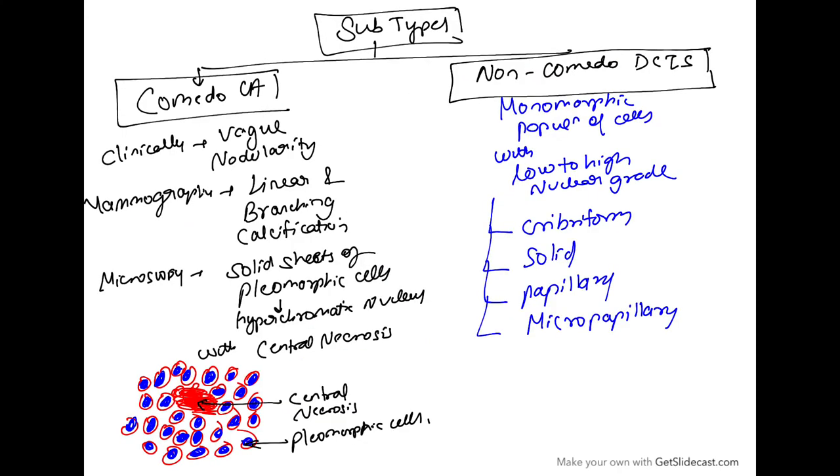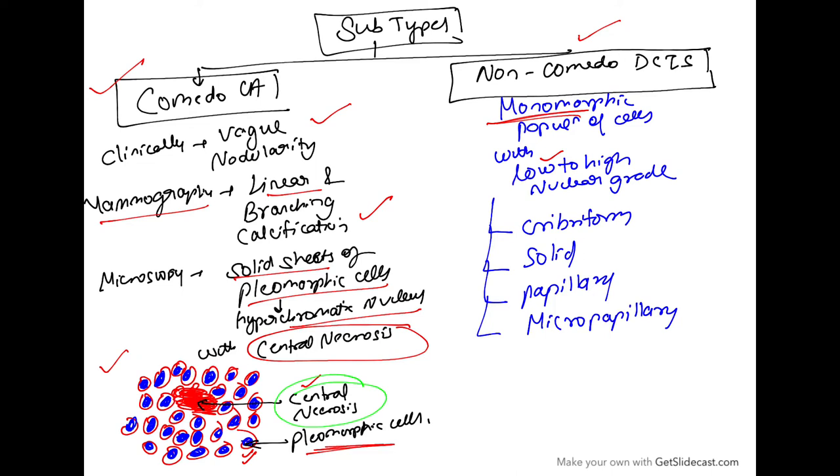There are subtypes classified as comedocarcinoma or non-comedocarcinoma. Clinically, comedocarcinoma is usually seen as vague nodularity. Mammographically, these are linear and branching calcifications. Microscopically, it's seen as solid sheets of pleomorphic cells with hyperchromatic nuclei and central necrosis. In this diagram you can see solid sheets of pleomorphic cells with hyperchromatic nuclei and central necrosis.